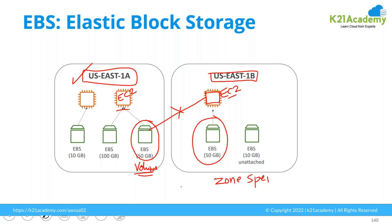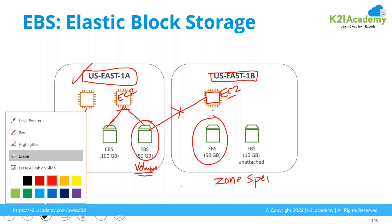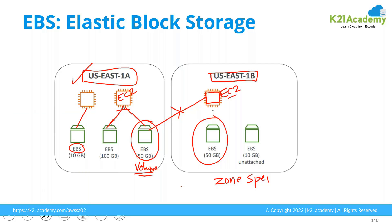With a single EC2 instance, you can attach multiple volumes. Depending upon the type of EC2 instance you select, you can define how many volumes can be attached to a single instance. Earlier, a single volume could be attached only to a single EC2 instance — I could not attach an EBS to two machines simultaneously. This was true some time back, but now this statement is false. Now a single EBS volume can even be attached to multiple EC2 instances with a feature called multi-attach.